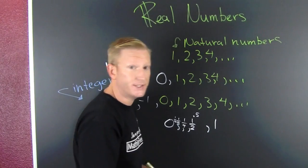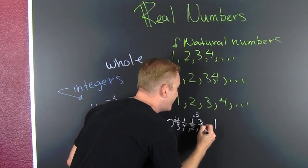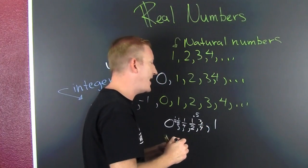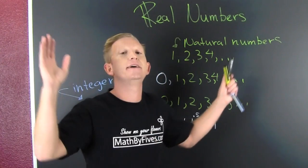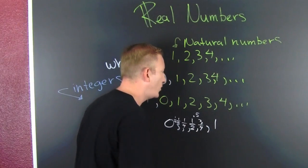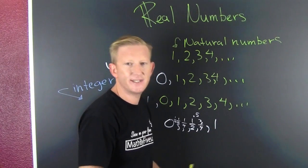Also, three point seven five is in there, or three fourths and four fifths and five sixths. And there's an infinite number of numbers in between zero and one.